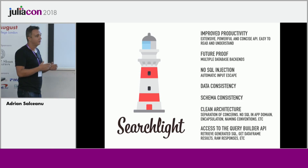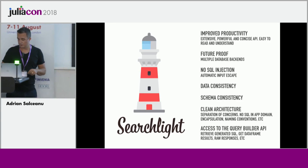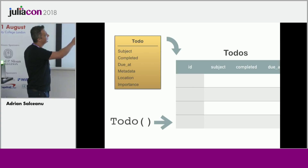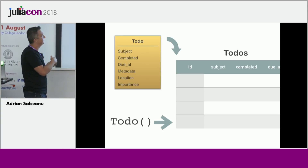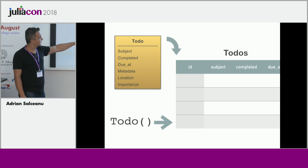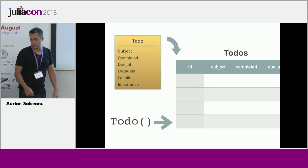Overall it improves productivity, future-proofs apps because the code doesn't depend on the backend, frees us from SQL injection risk by automatically escaping input, guarantees data and schema consistency, promotes a clean architecture development style, and provides access to the query builder API. In a nutshell, if we have a type with fields and a table with columns, once we map the fields to the columns, Searchlight takes care of persisting the data from the object into the corresponding columns. An instance of our type corresponds to a row in the corresponding table, so it persists it and we can retrieve it from the database.